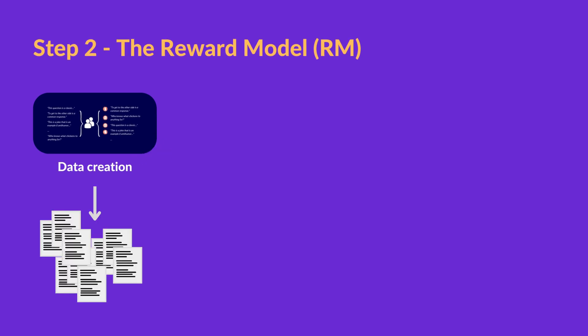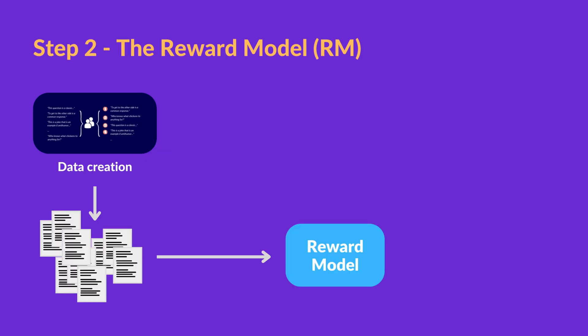This new data is used to train a reward model, or RM, in which the model takes as input a few of the SFT model outputs and ranks them in order of preference. One important caveat to keep in mind is that this model strongly reflects the preferences of the labelers that worked on this project.